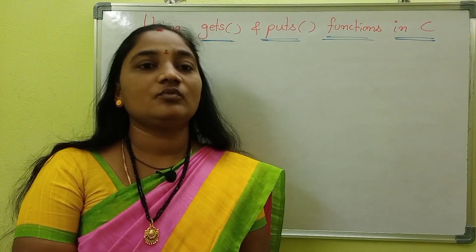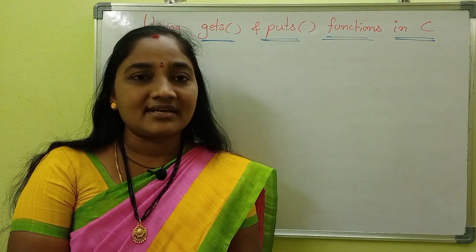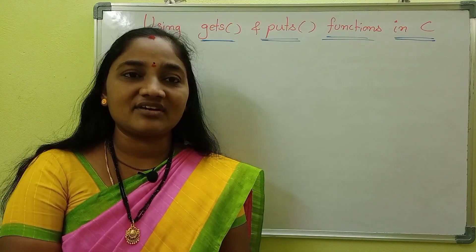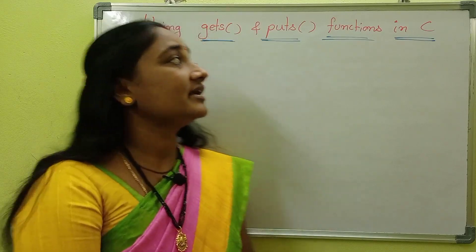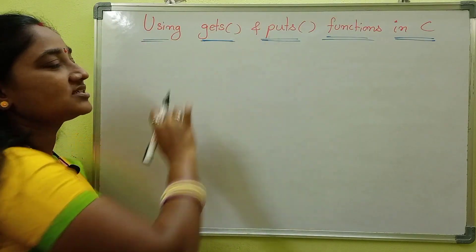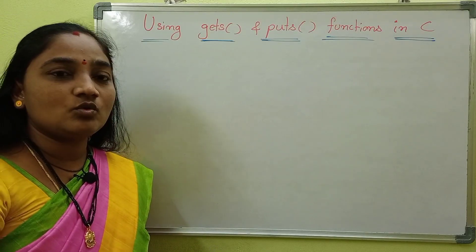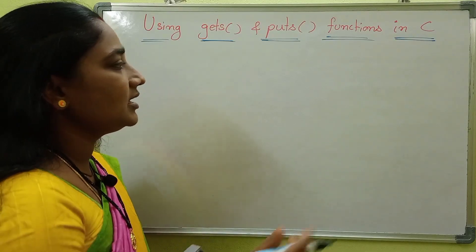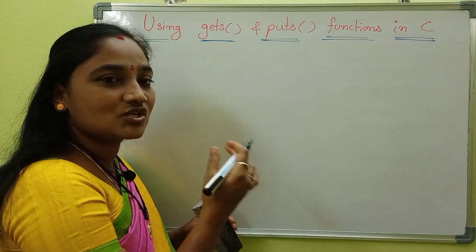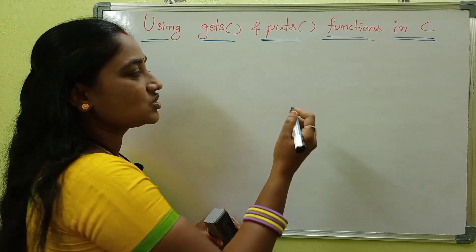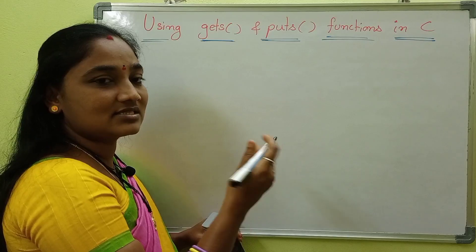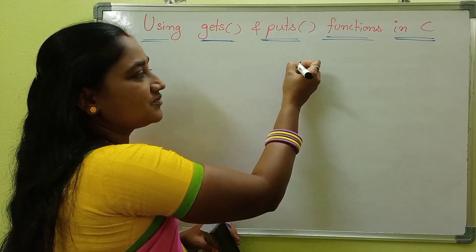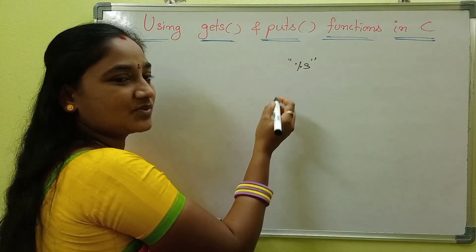In this session, if you want to use any strings, gets function can be used for reading a string, and puts function can be used for printing a string. We will discuss strings — strings are nothing but a character array. If you want to use a string, we use the format specifier %s. %s is the format specifier.